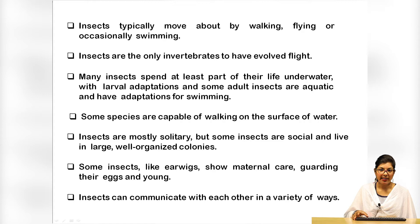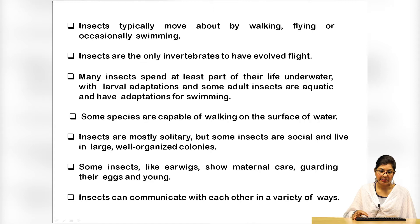Insects typically move about by walking, flying, or occasionally swimming. Insects are the only invertebrates to have evolved flight. Many insects spend at least part of their life under water with larval adaptations, and some adult insects are aquatic and have adaptations for swimming. Some species are capable of walking on the surface of water. Insects are mostly solitary, but some insects are social and live in large well-organized colonies, such as honey bees, ants and termites. Some insects like earwigs show maternal care, guarding their eggs and young. Insects can communicate with each other in a variety of ways.